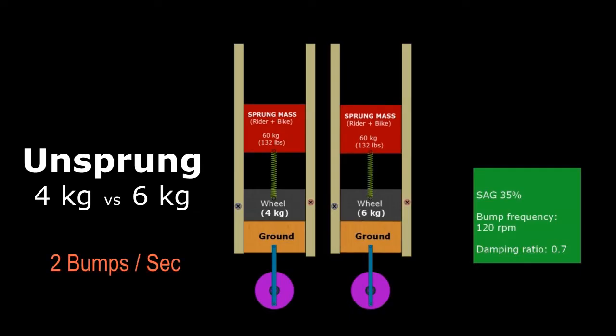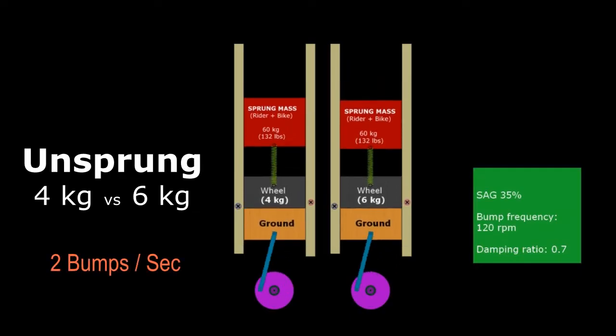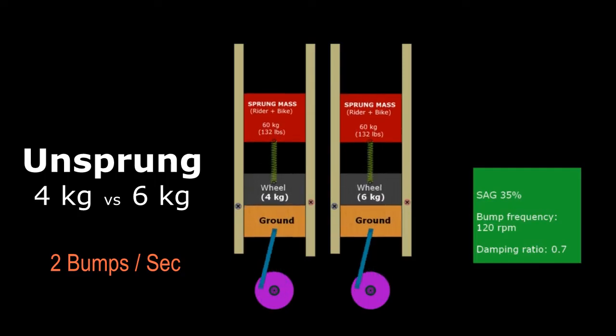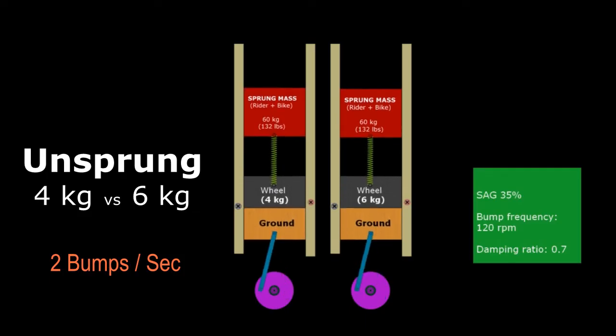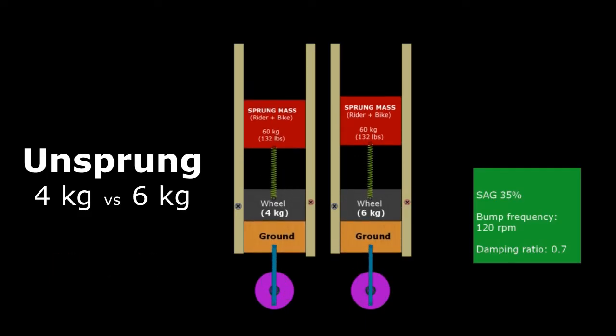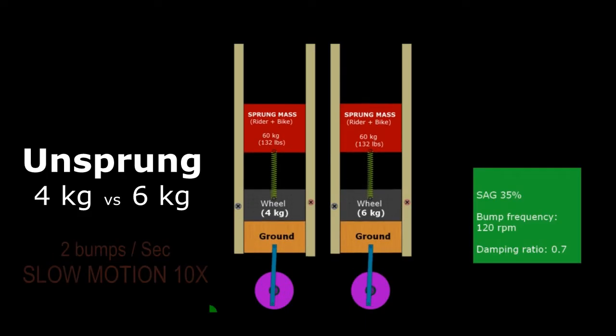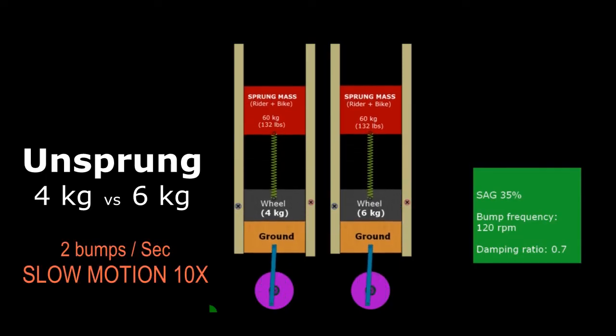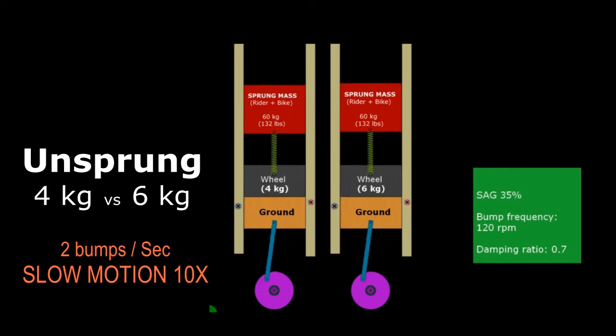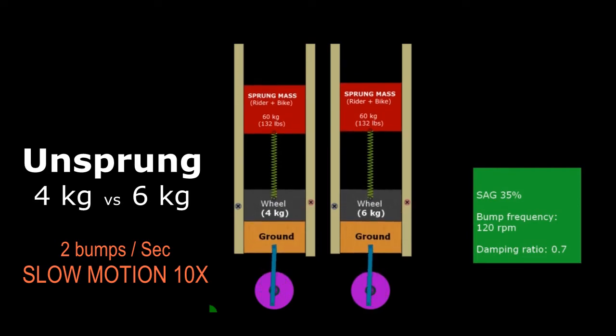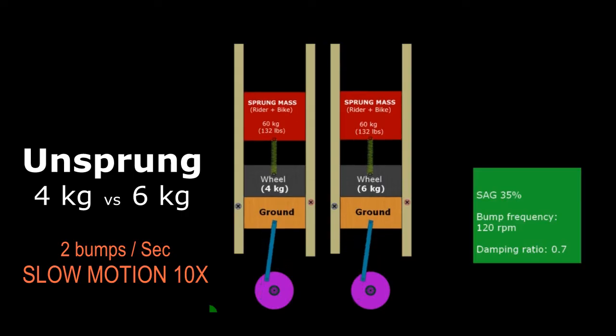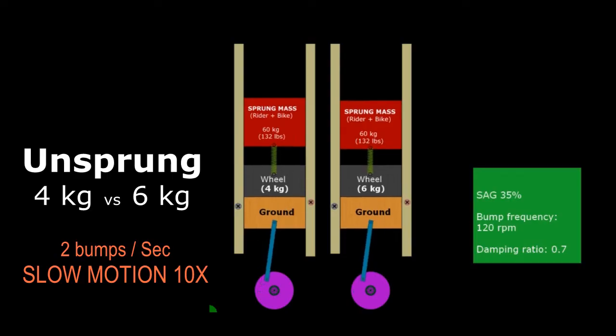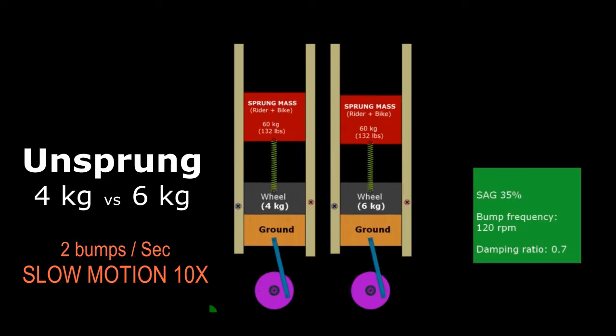Now again, the same simulation but with more realistic unsprung masses. So we are going to compare 4 kilograms with 6 kilograms. So this is real-time speed and we cannot see a big difference comparing 4 kilograms versus 6. I'm going to repeat in slow motion, ten times slower motion, okay, so very slow motion, and we cannot observe any significant difference in this scenario.